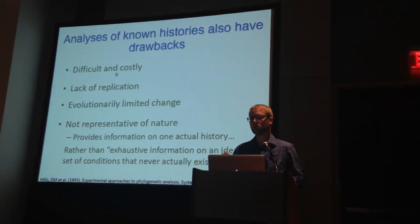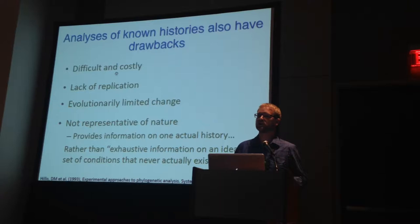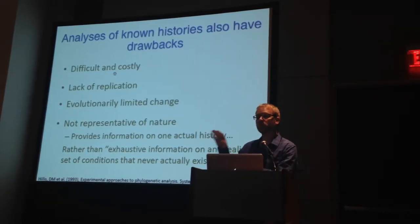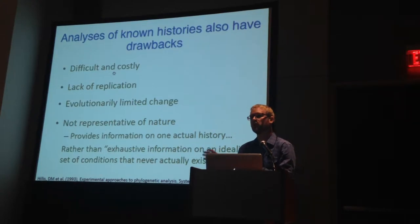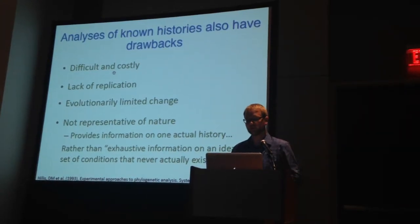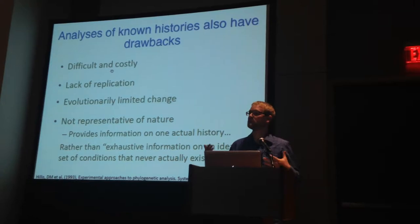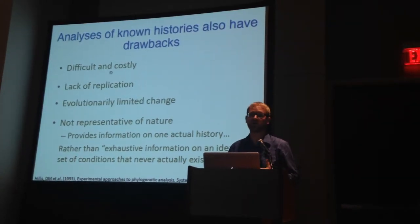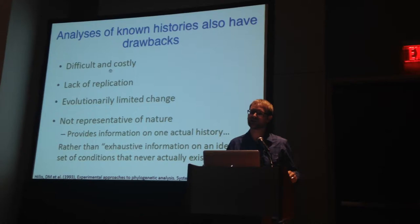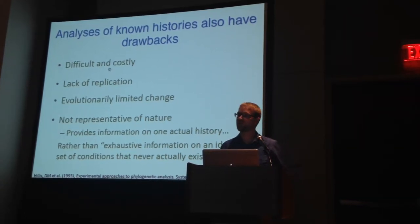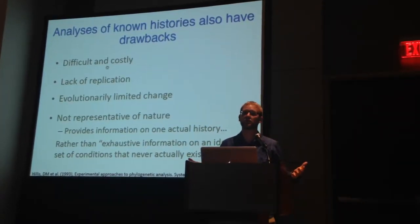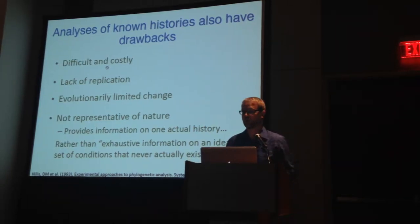His other main critique was just that there's a trade-off between the feasibility of experimental phylogenetics and whether it's more biologically realistic or not. It is not necessarily representative of all of nature — you can't generalize an experimental phylogenetic study. But it does provide information on one actual evolutionary history, as opposed to an exhaustive set of conditions that never actually apply in nature.